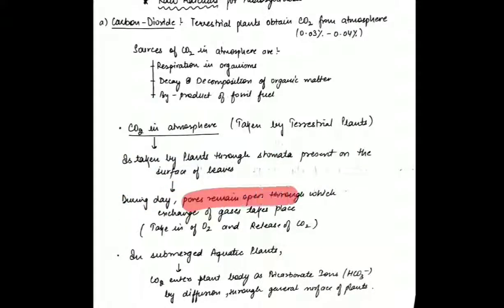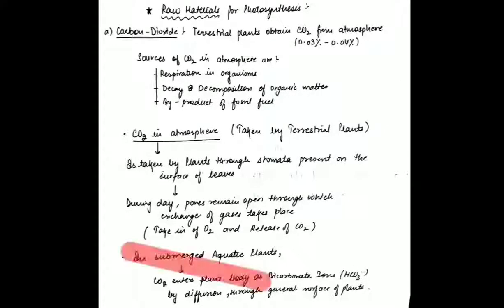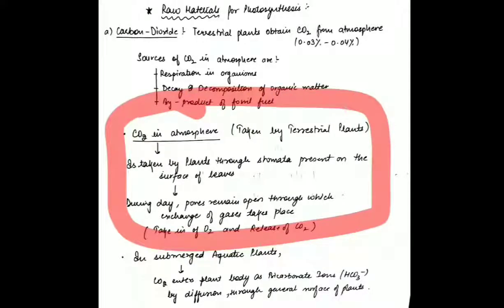During the day, the pores remain open through which exchange of gases takes place — oxygen is released and carbon dioxide is taken in, or vice versa. Oxygen is also released during photosynthesis. But if the plant is also performing respiration, then the vice versa happens — oxygen is taken in and carbon dioxide is thrown out. Gaseous exchange takes place through stomata, which contains two guard cells and has a stomatal pore in the center. When that pore opens, exchange of gases takes place; it stops when the pore gets closed.